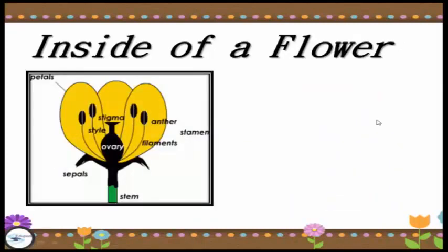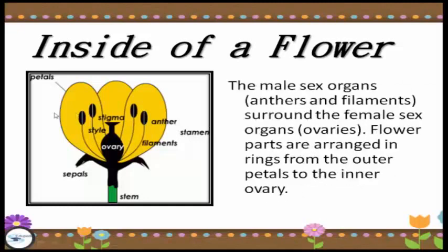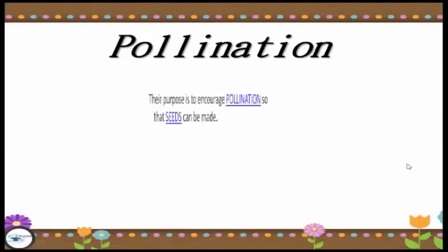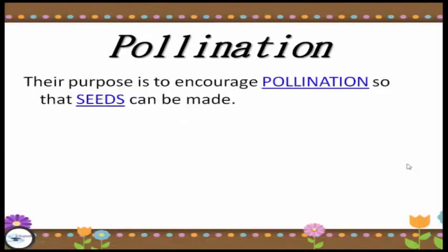So what is inside of a flower? As you can see in the image, we have the male sex organs — the anthers and filaments — surrounding the female sex organ, which is the ovary. The anther and stamen are key parts. Flower parts are arranged in rings from the outer petal to the inner ovary. The purpose of these parts of the flower is to encourage pollination so that seeds can be made.